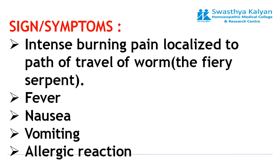Signs and symptoms: intense burning pain localized to the path of travel of the worm. This is known as the fiery serpent, because as the worm travels it affects the nerves and creates a burning sensation — very intense. The person suffering will feel something crawling and creating a lot of burning sensation. There is also fever, nausea, vomiting, and allergic reactions associated with the presence of a foreign body.